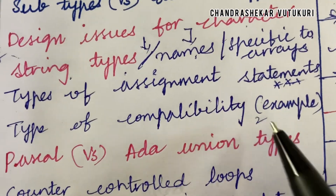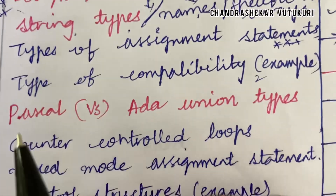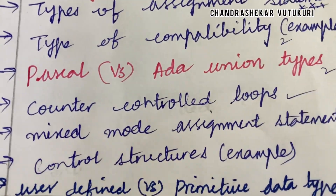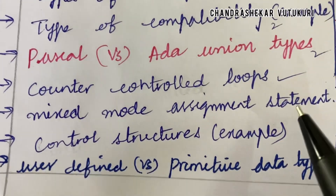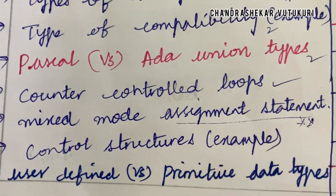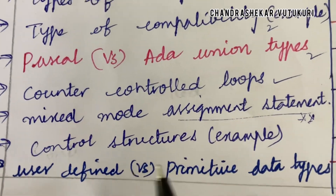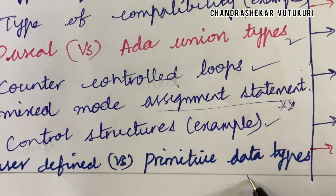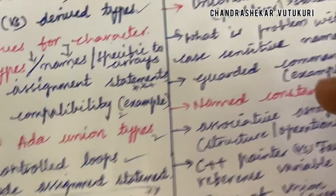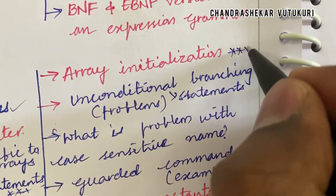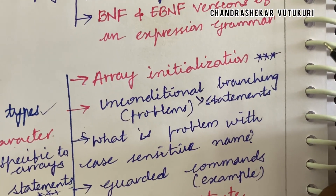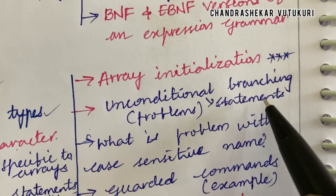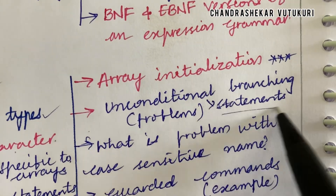Types of assignment statements is also said to be a sure-shot question. Type compatibility is a short question. Pascal versus Ada on type is a short question. Counter-controlled loops and mixed-mode assignment statements is also said to be a short question. Control structures along with an example, user-defined versus primitive data types, and array initialization is said to be a topmost question. The second unit is too lengthy in its structure.